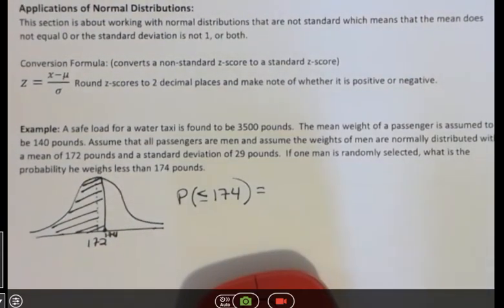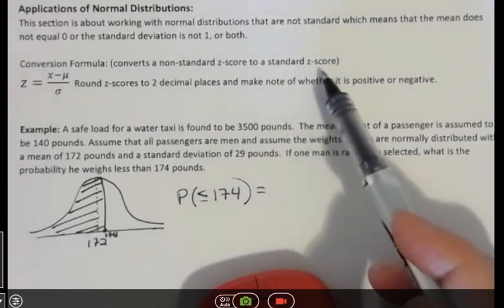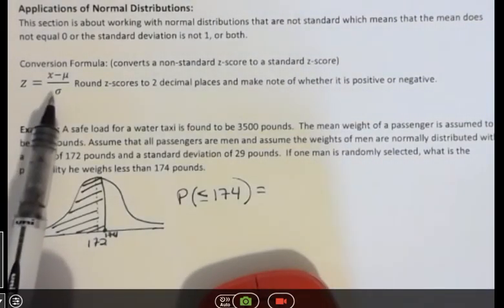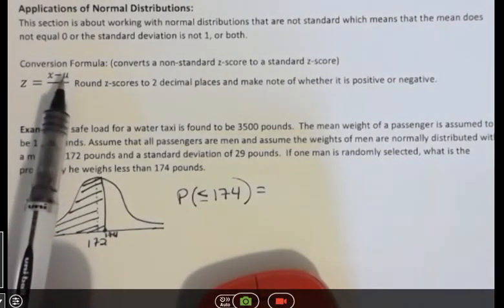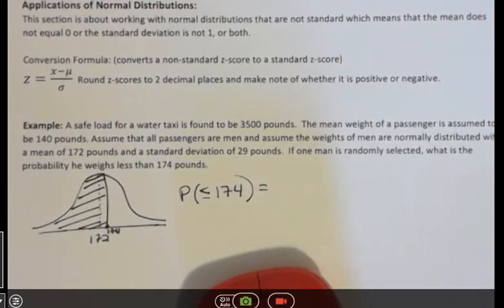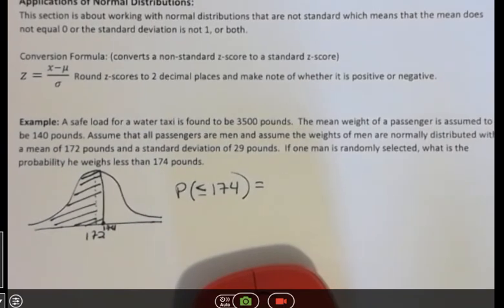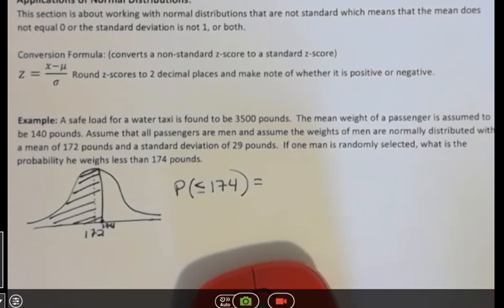You can always convert a non-standard into a z-score to a standard z-score by using this formula where you're plugging in your mean, x minus the mu over standard deviation. And we usually round that to two decimal places. But for our purposes, we can just use the non-standard information that we're given. So we can find a z-score that's non-standard. That's fine.